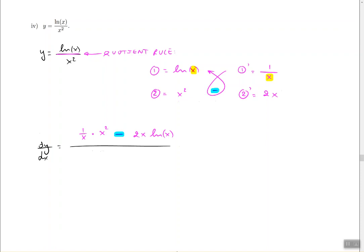All divided by the old denominator squared. So the old denominator used to be x squared. We're going to take that guy and square it one more time. So that's technically the answer, except it looks pretty terrible. Let's clean it up a little bit.